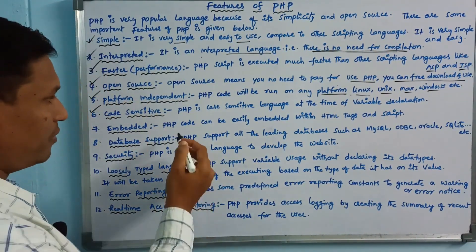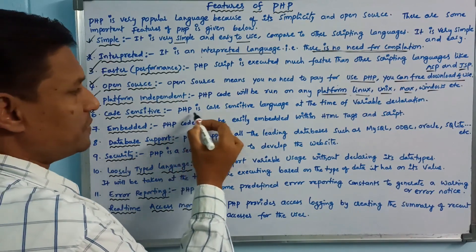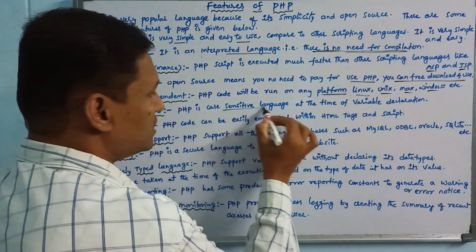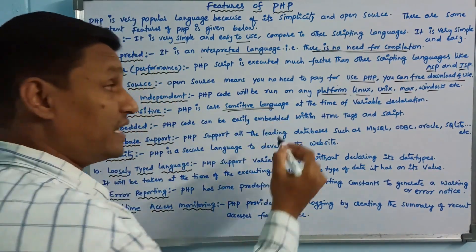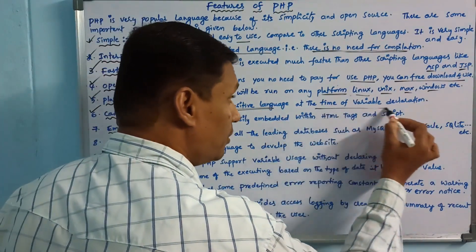Feature six: Case sensitive. PHP is a case sensitive language at the time of variable declaration.